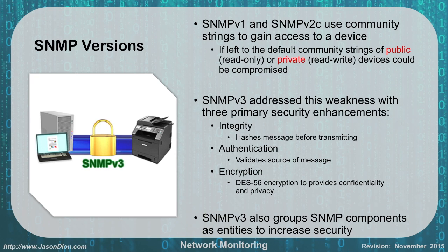There are several versions of SNMP, the latest being SNMP version 3, which is what most people are using now and what you should be using in your networks. SNMP versions 1 and 2 use community strings to gain access to devices. If you leave the default community strings of 'public' (read-only) and 'private' (read-write), the devices can be compromised by attackers. Version 3 addresses these weaknesses by adding three primary security enhancements: integrity through hashing messages before transmission, authentication to validate the source, and confidentiality using DES-56 encryption. Note that DES-56 is fairly weak, but SNMP typically operates on internal trusted networks. SNMP v3 also groups components as entities to increase security.